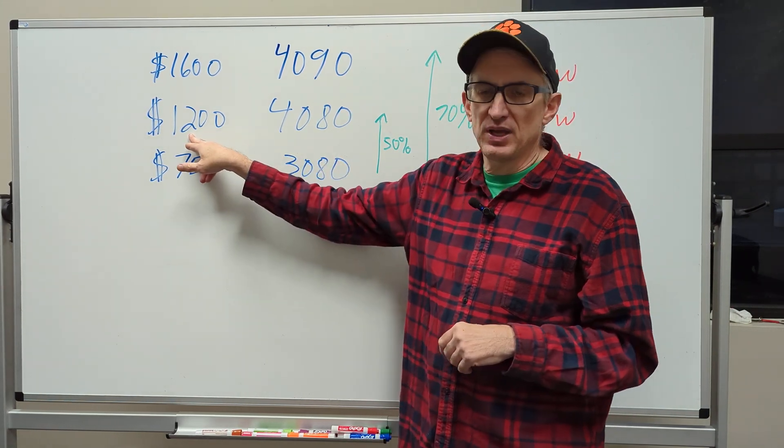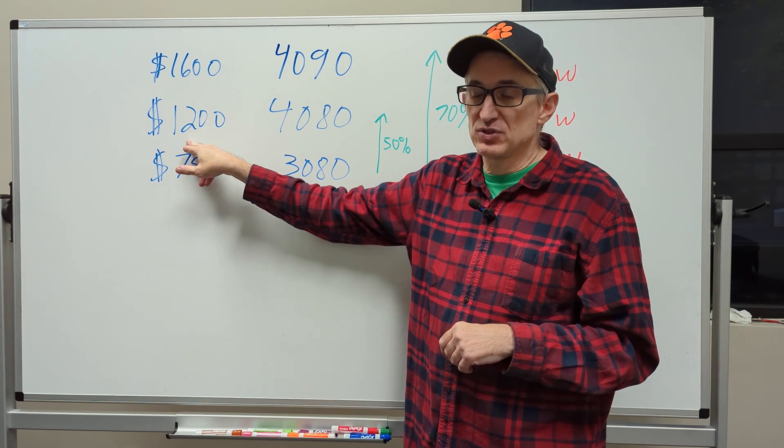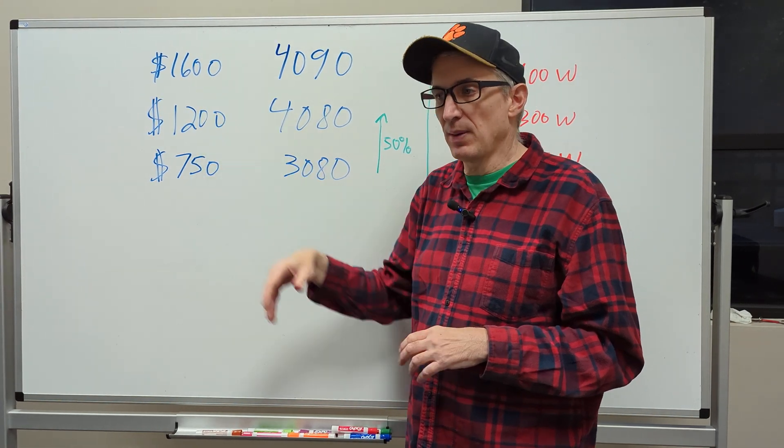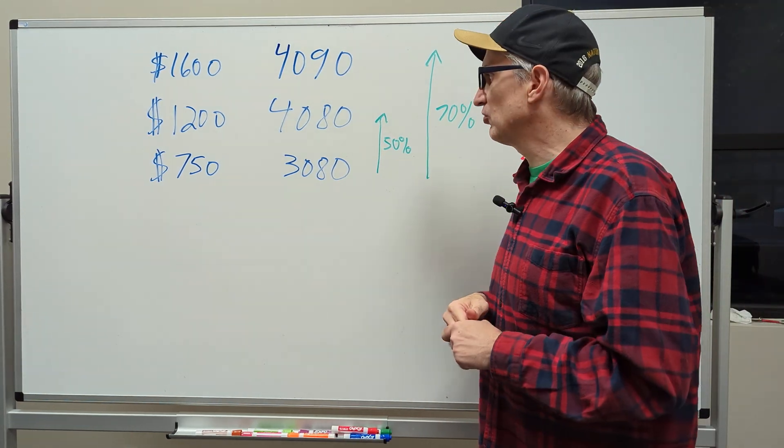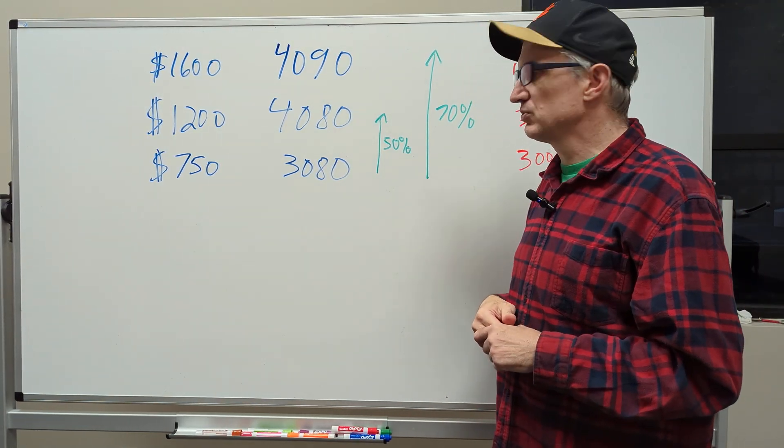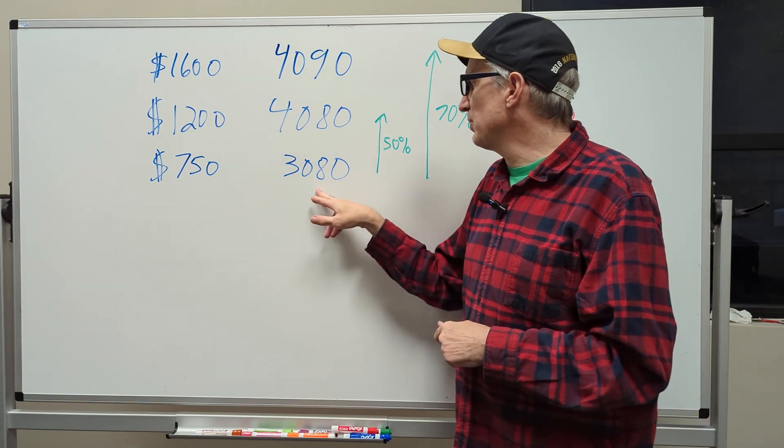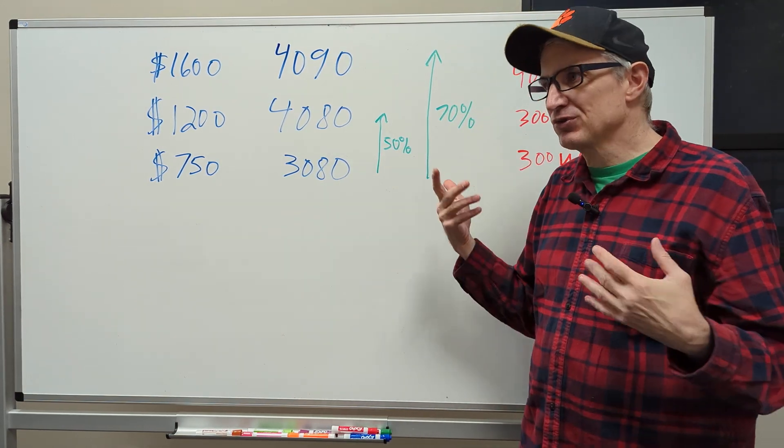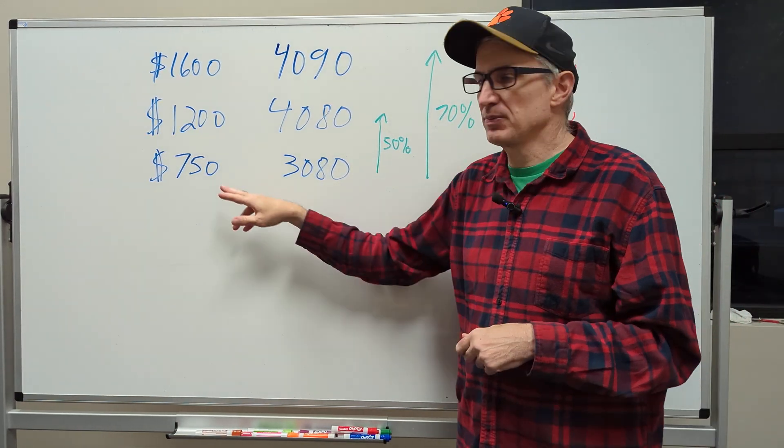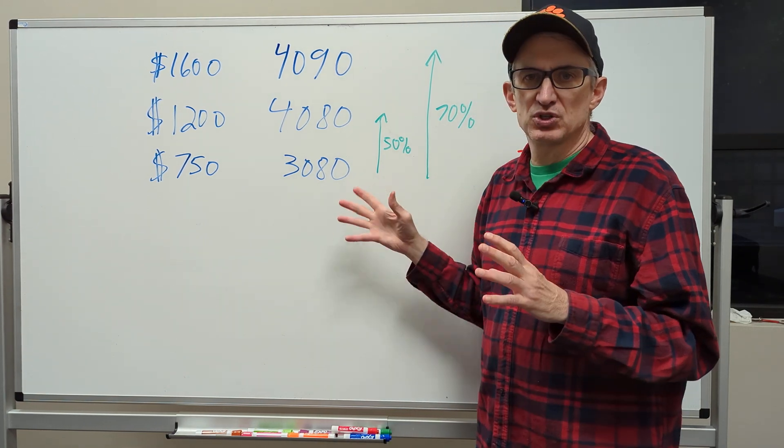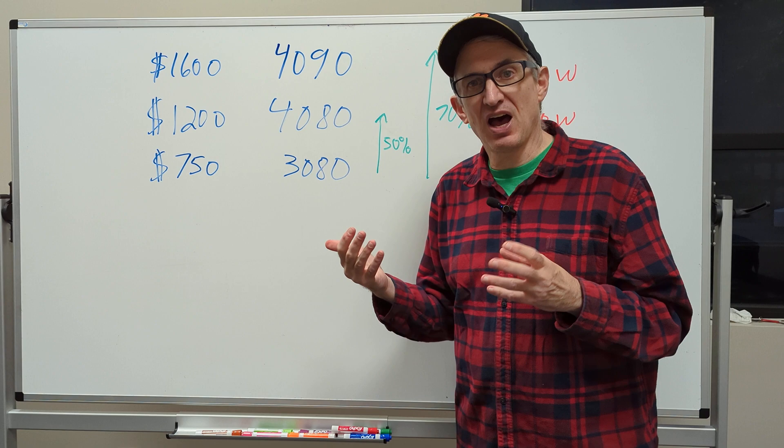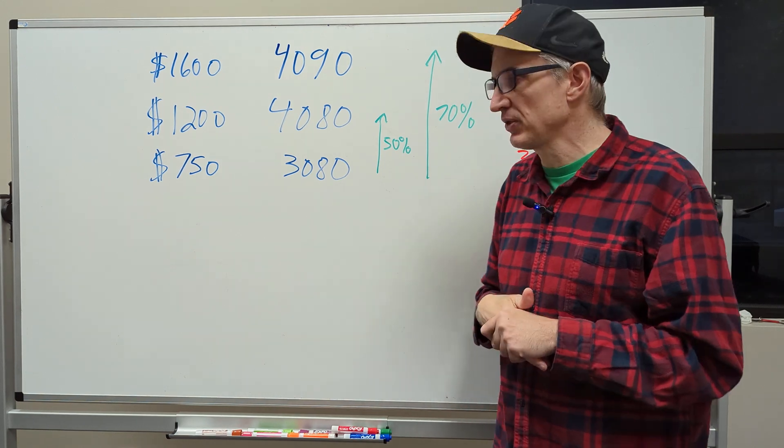The 4080 is going to start at $1,200 and could go up for the fancier cards. And again, I'd recommend save your money. Just buy the $1,200 card if you so choose. And then just for comparison, a 3080 nowadays goes for around $750. I think the MSRP is supposed to be $699 on that. We're just putting that in as a reference point because that's the hot card that everybody wanted from the 30 series.